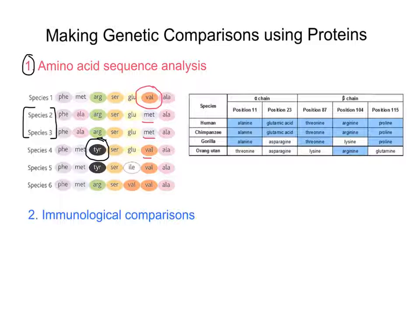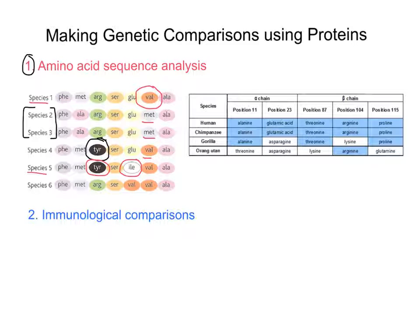That is simply all there is to amino acid sequence analysis — you just look at the sequence and count the number of similarities or differences. Taking species five as an example, we've got a TYR here and also an ILE here. So if we were to compare species five to species one, it's likely they're not very closely related because we've got two amino acids that are different within that sequence. As I've covered in my videos on protein structure, slight changes in the amino acid sequence — a change in the primary structure — will ultimately alter the tertiary or even quaternary structure of a protein and thus alter its function.